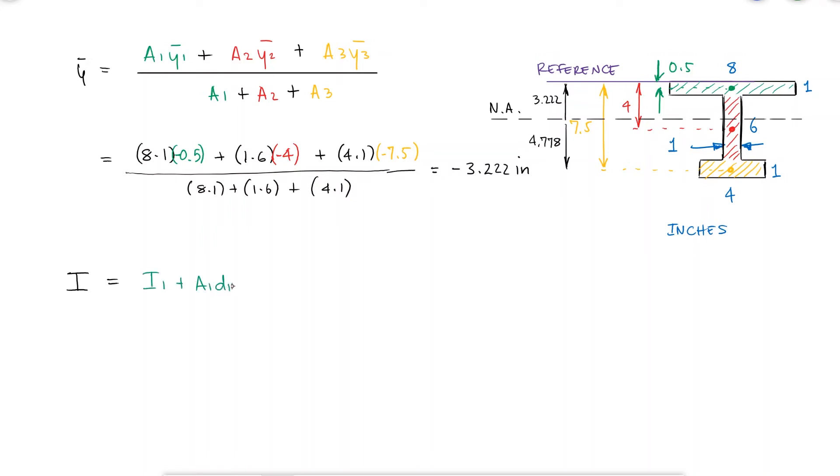Using the parallel axis theorem, I can calculate the second moment of area i. The distance from the neutral axis to the centroid of the green rectangle is 2.78, the distance from the neutral axis to the centroid of the red rectangle is 0.78, and the distance from the neutral axis to the centroid of the yellow rectangle is 4.28.